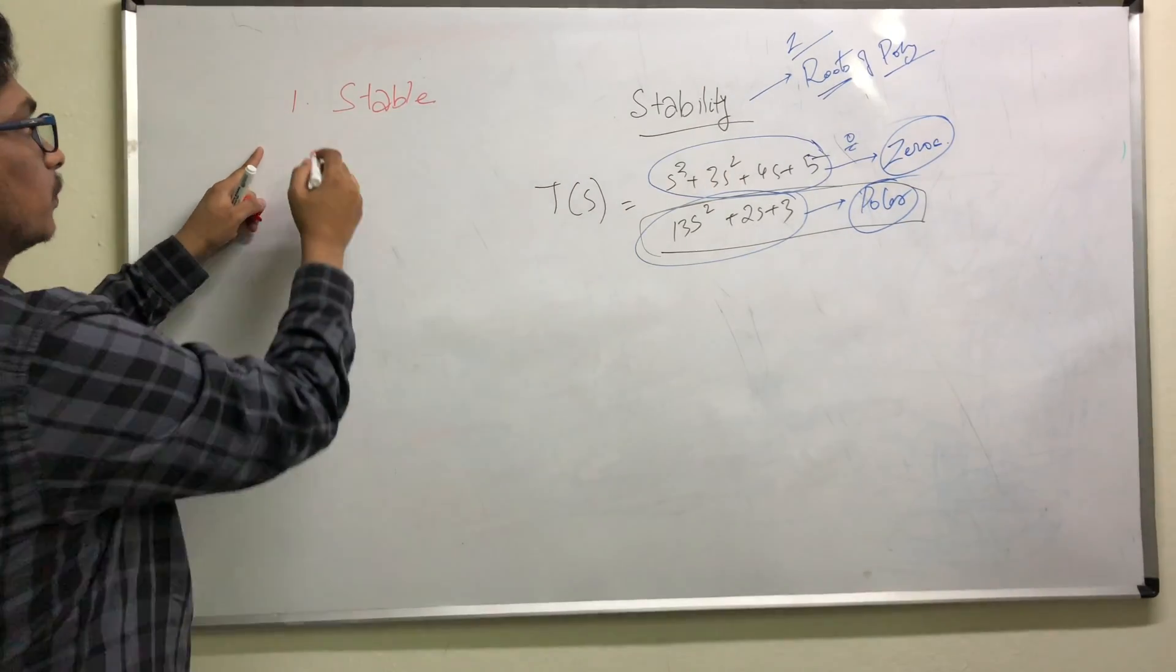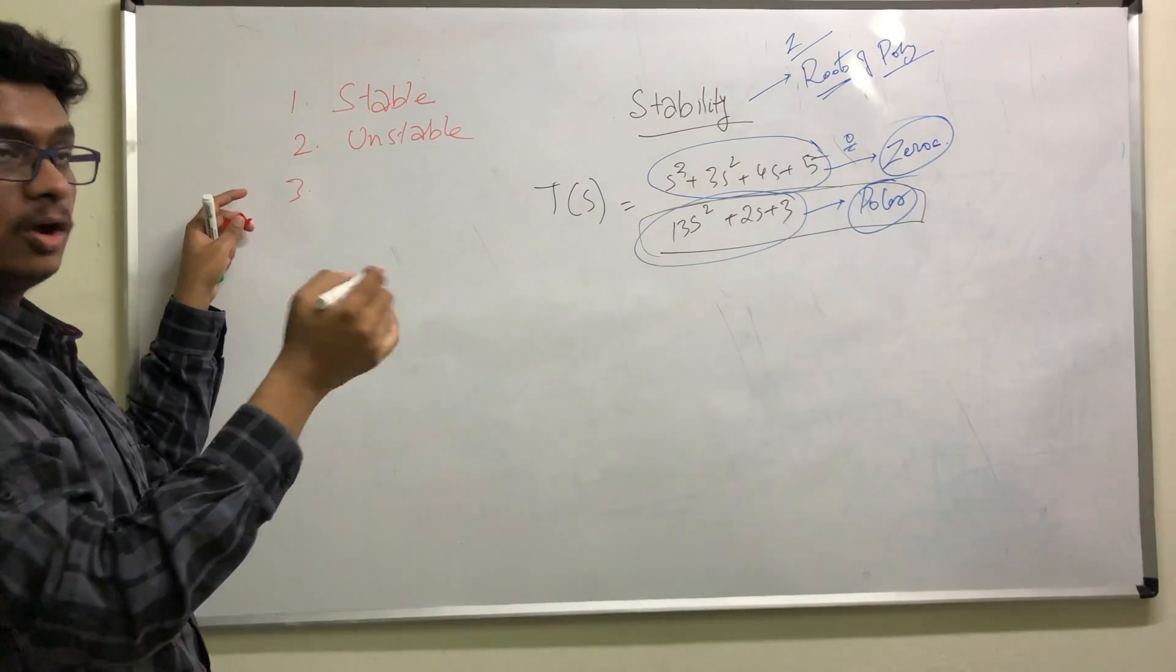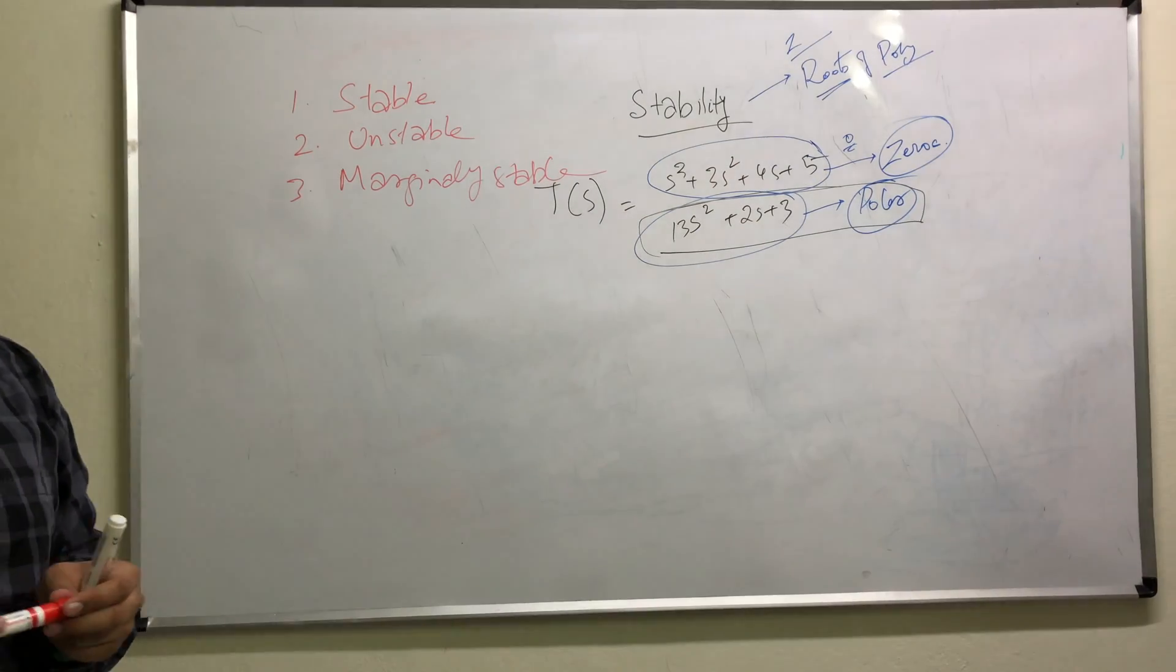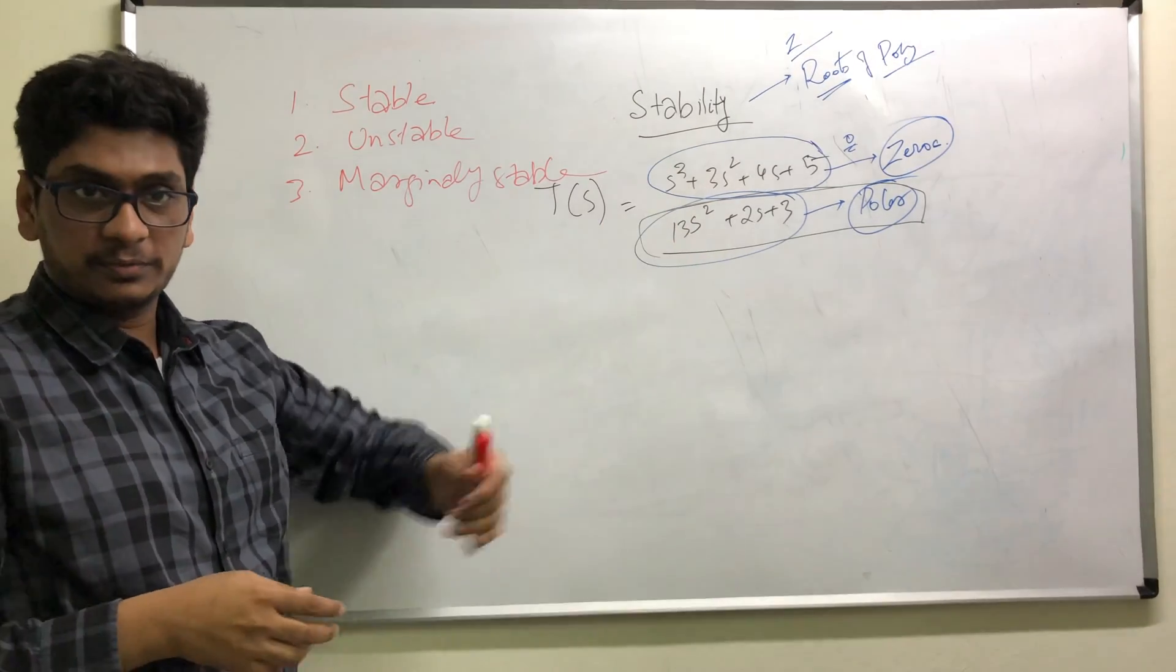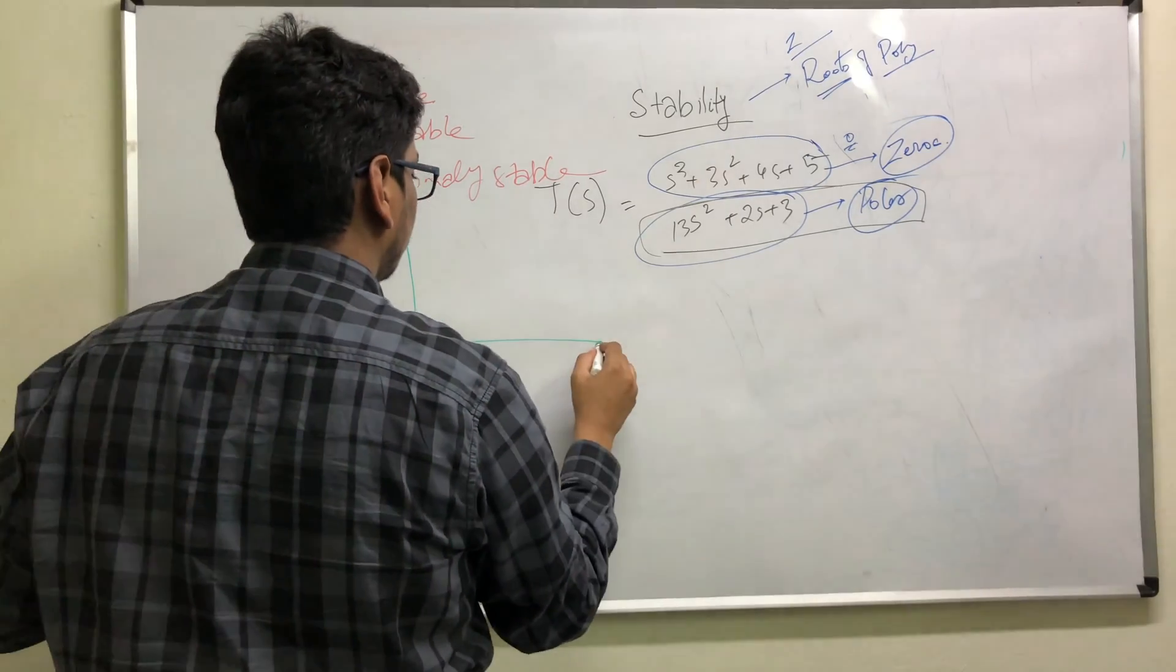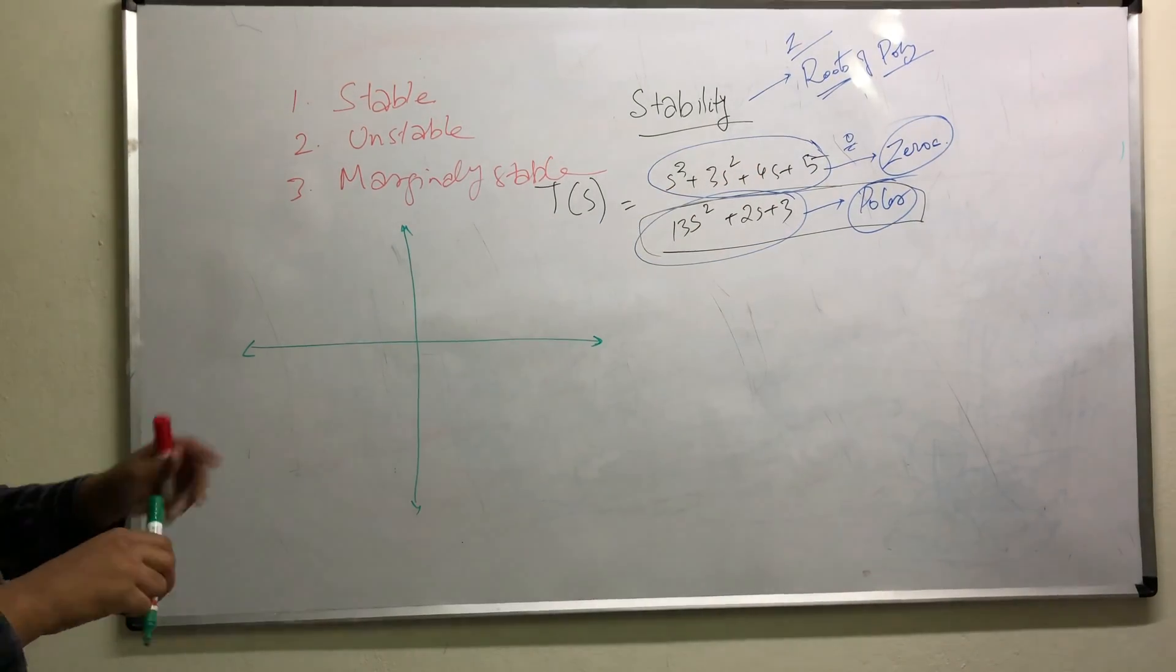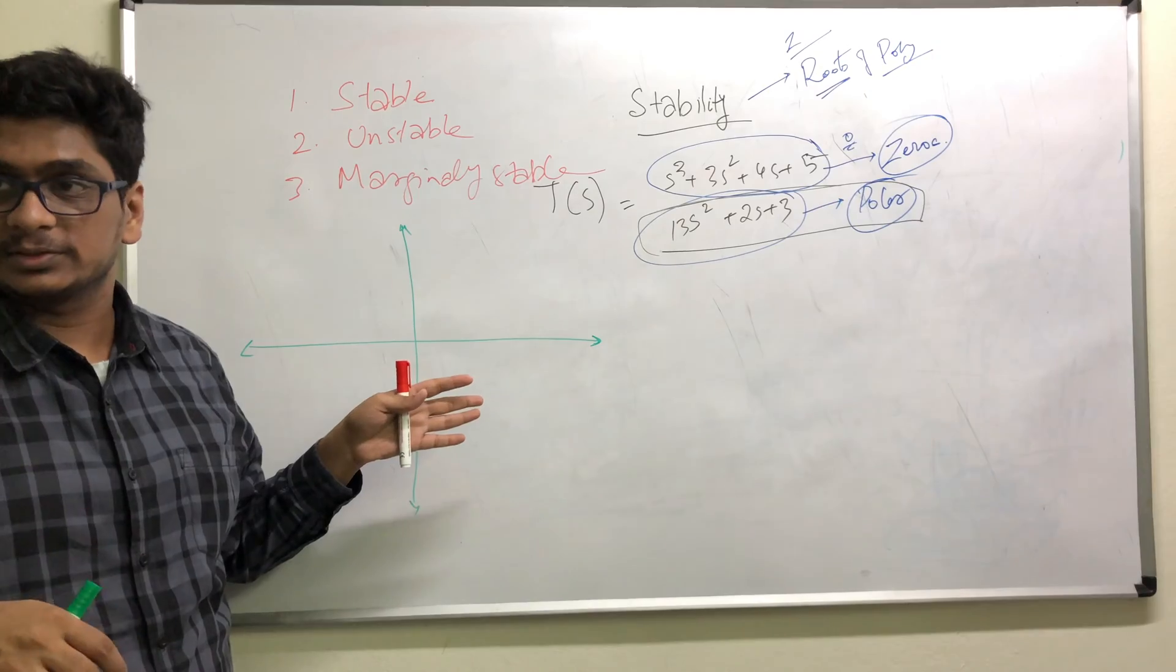It can be stable, it can be unstable, or it can be marginally stable. So if the poles of a transfer function - where can anything lie? Any pole, or the roots of this transfer function, they can lie on the left half of the plane or the right half of the plane or on the imaginary axis.